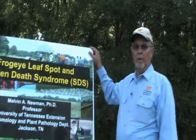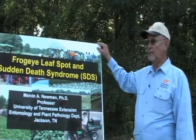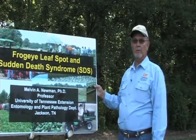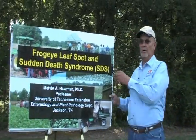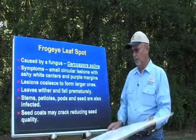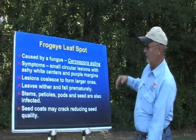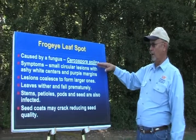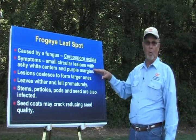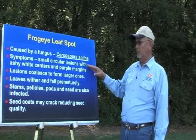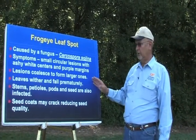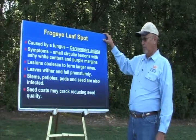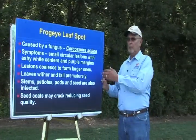We'll go over three or four diseases this morning. Frog eye leaf spot is one of our worst diseases, along with sudden death syndrome and others. Frog eye is caused by Cercospora and causes little white-looking lesions on the leaves, stems, and pods. The leaves wither and fall prematurely, and the seed coat is cracked.